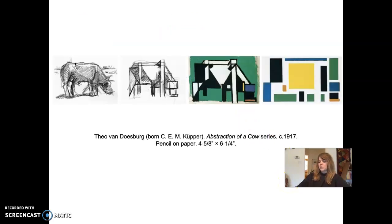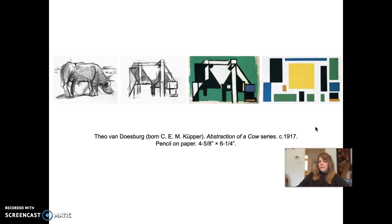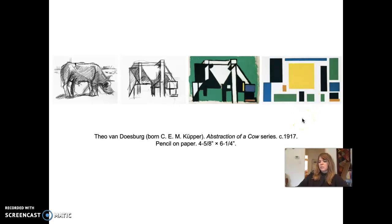We'll look at a famous piece by Theo van Doesburg — the Abstraction of the Cow series from 1917. In this series of drawings and paintings, we can see the stages of abstraction. He started with a rough pencil-on-paper drawing that is slowly abstracted more and more until it becomes a final painting of colored rectangles and squares. If we had seen only the final painting, we would have had no idea it was supposed to represent a cow.